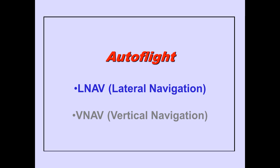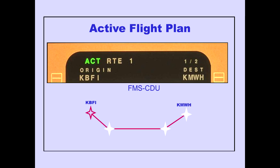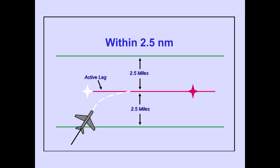Now let's discuss LNAV. Pushing the LNAV switch arms the LNAV mode. LNAV is displayed on the PFD in white. There are three conditions to engage LNAV: an active flight plan has been entered into the FMS-CDU, the airplane is above 50 feet radio altitude, and within 2.5 miles of the active leg.